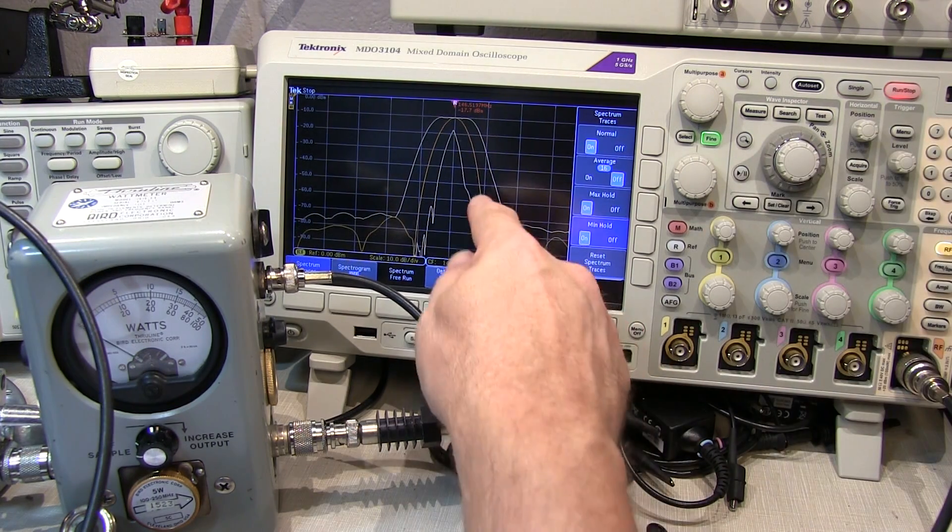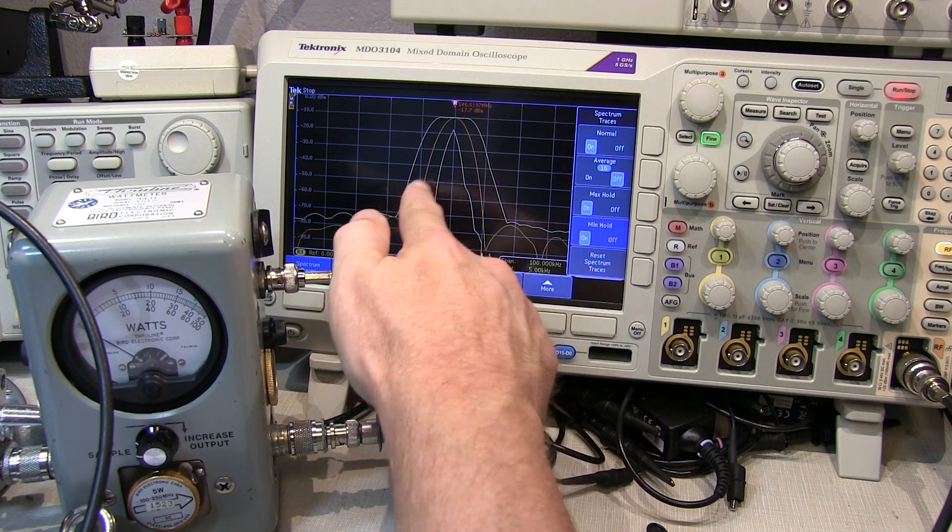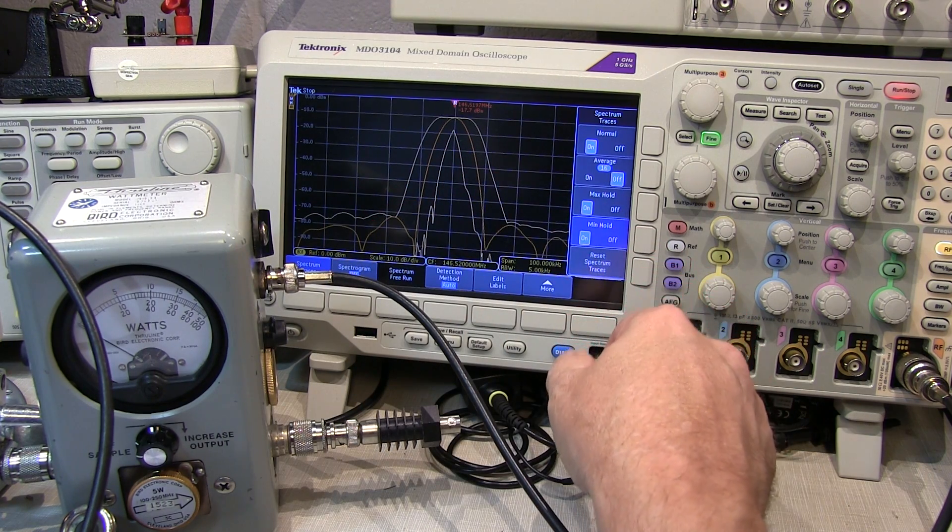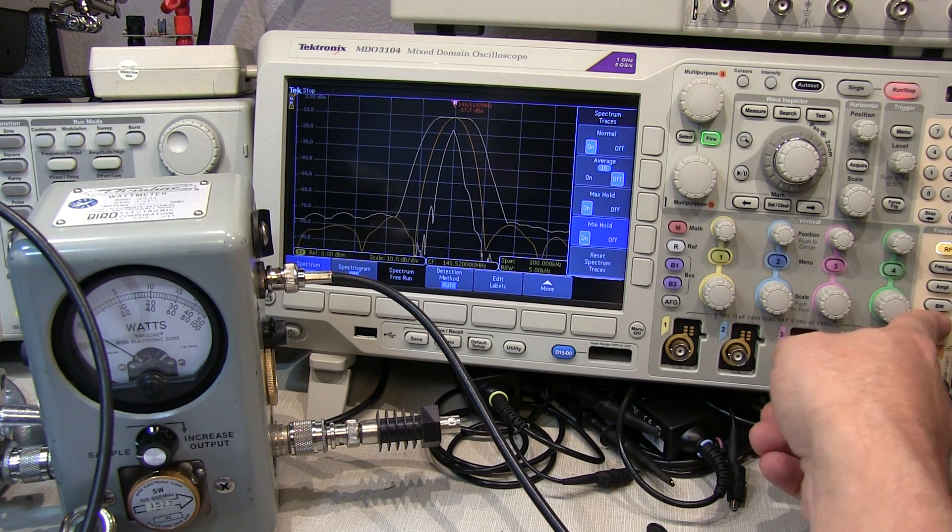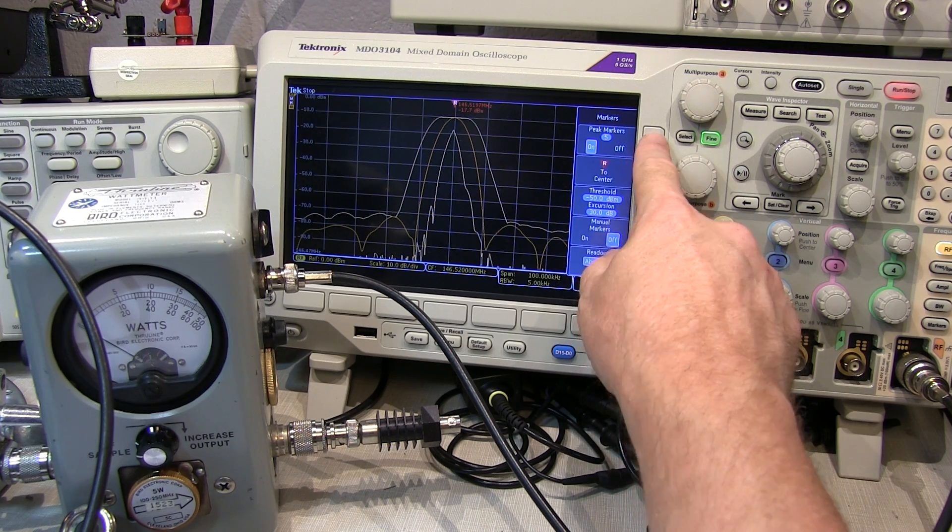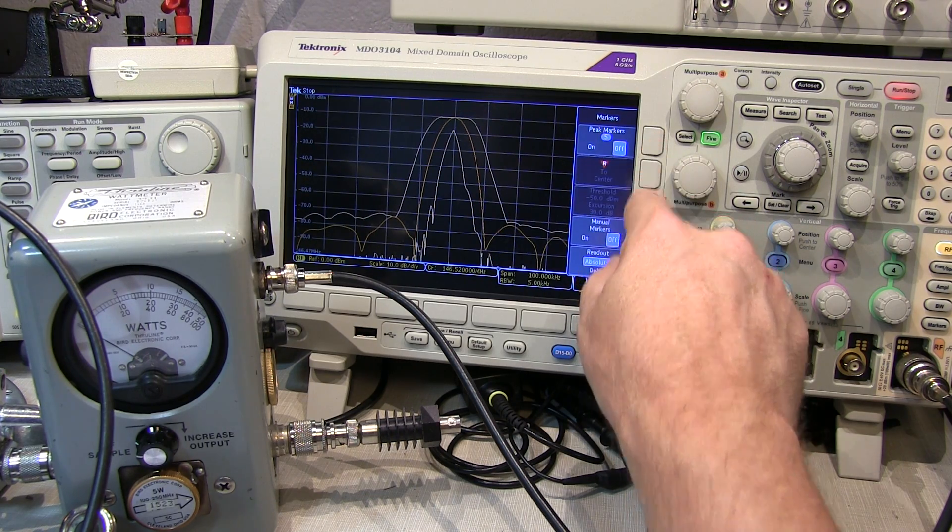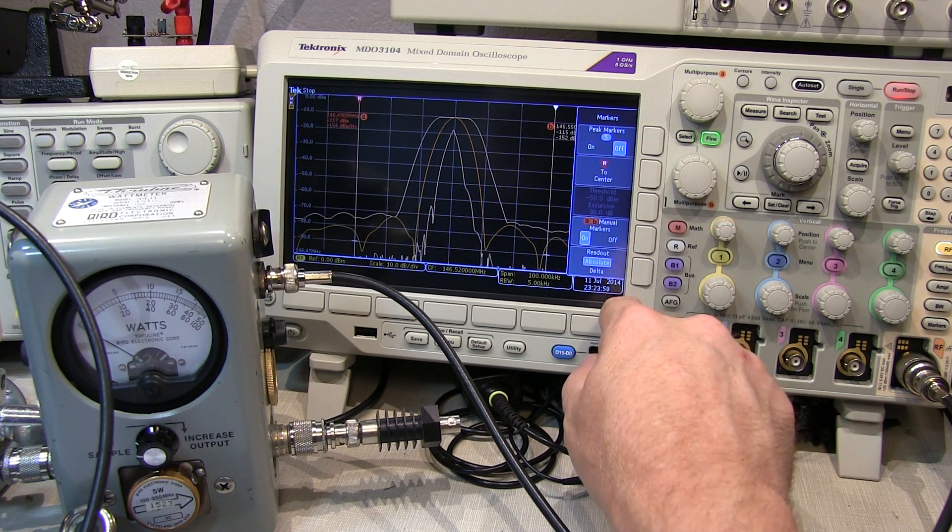Now with maximum and minimum excursion picked up on the spectrum, let's put on some markers. Let me turn off the peak marker and we'll turn on some manual markers.